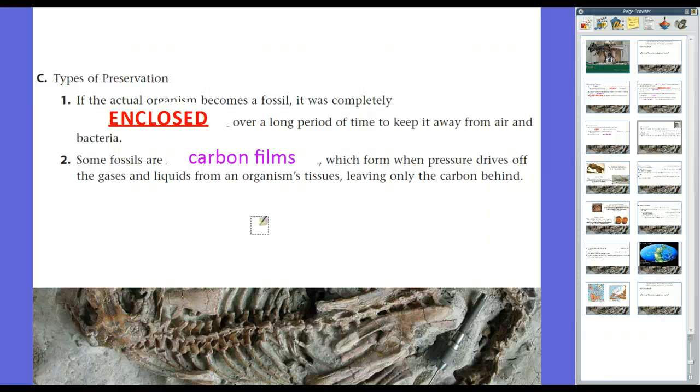Some fossils are what we call carbon film. Carbon film forms when pressure drives off the gases and liquids from an organism's tissues, leaving only the carbon behind. So, what kind of happens is, for example, a fish got caught in some rock. Maybe there was a flood, it died, settled to the bottom, soil came on top of it. And what happened is, as the compaction and the cementation took place, all that pressure and the heat squeezed out all of the water, all of the gases that made up the organism's tissues, and all that was left was the carbon. And the carbon was imprinted.